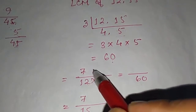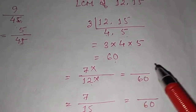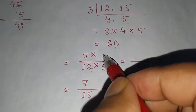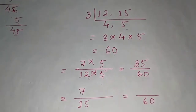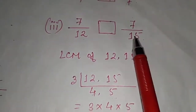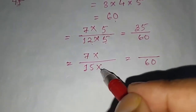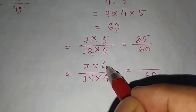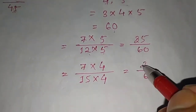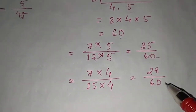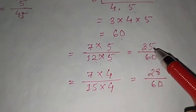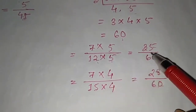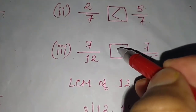For 7/12: multiply by 5 (since 12 × 5 = 60), so numerator becomes 7 × 5 = 35, giving 35/60. For 7/15: multiply by 4 (since 15 × 4 = 60), so numerator becomes 7 × 4 = 28, giving 28/60. Denominators are now the same. Numerators: 35 vs 28 — 35 is greater, so 7/12 is the greater fraction.